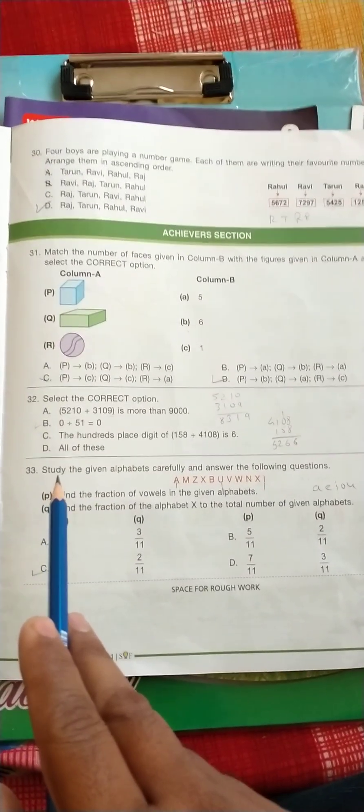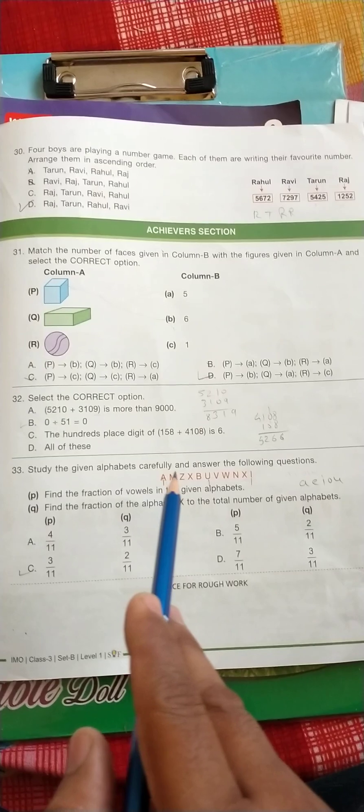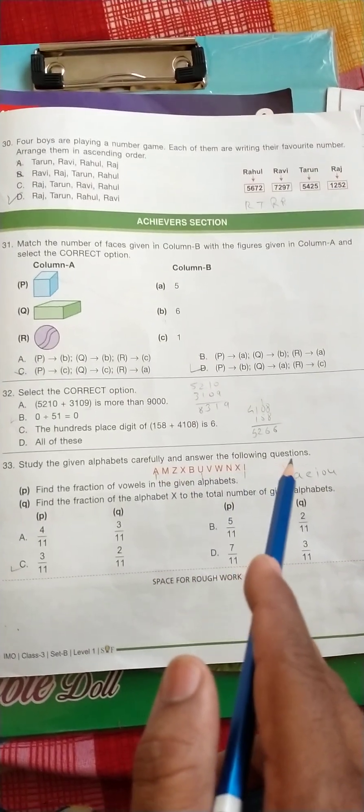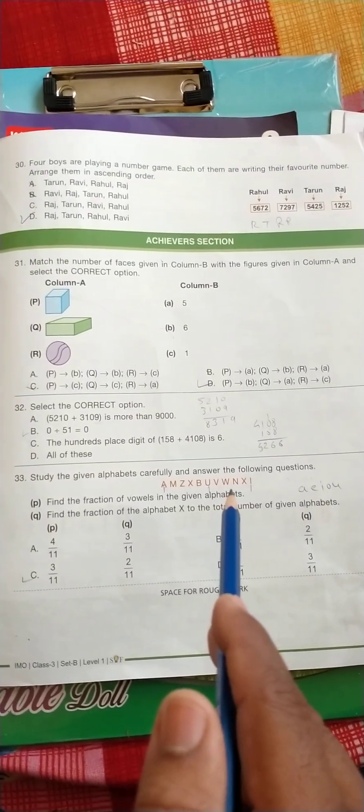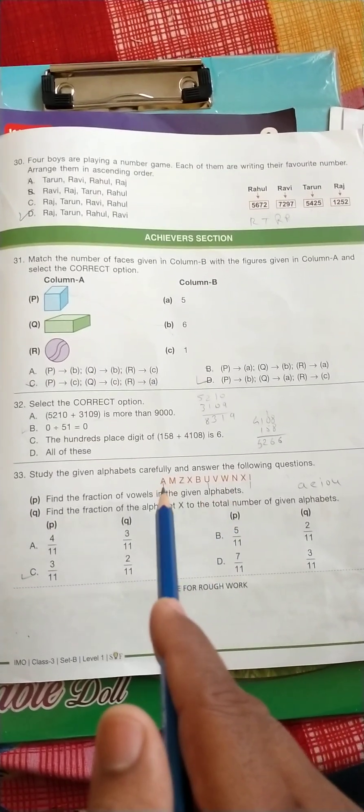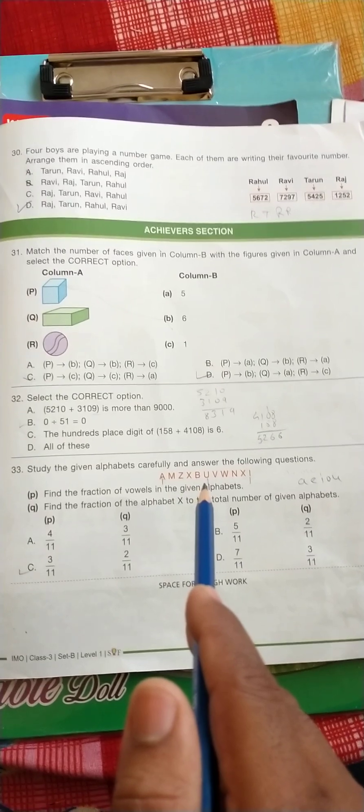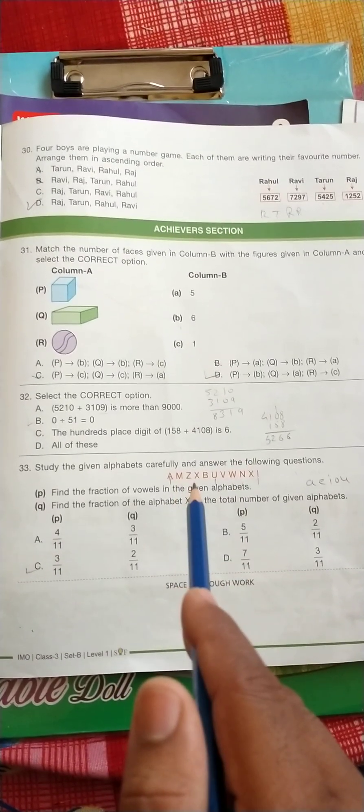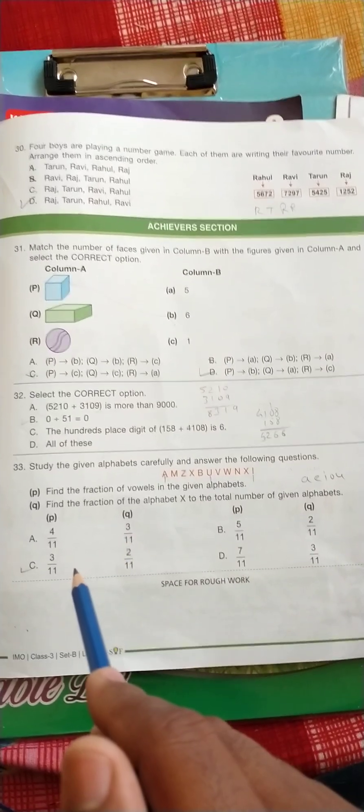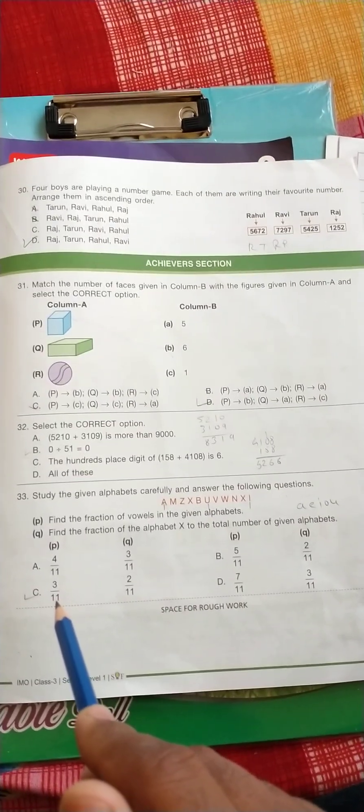Question number 33: study the given alphabet carefully and answer the following questions. Find the fraction of vowels in the given alphabet. So the vowels in the given is A, U, and I - there is 3 vowels and total alphabets are 11. So correct answer is 3 upon 11.